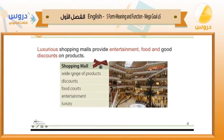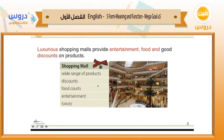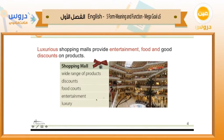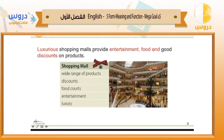First, let's look at shopping malls. There are different words related to shopping malls: a wide range of products — if you go to a shopping mall you will find a variety of products — and discounts. You'll also find food courts, the area where you can eat, and entertainment such as theme parks. We can say there's a luxurious life there. For example: 'Luxurious shopping malls provide entertainment, food, and good discounts on products.'